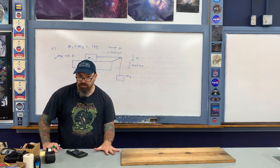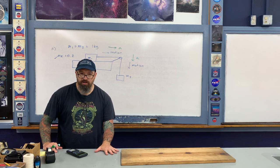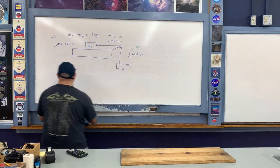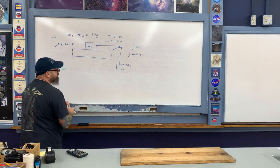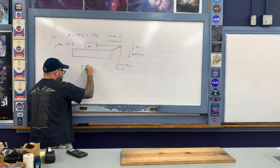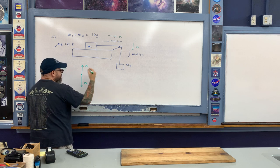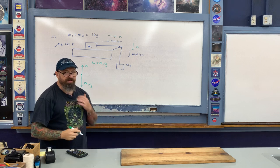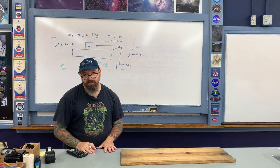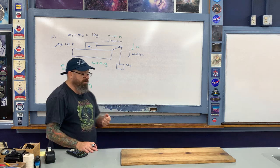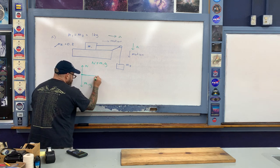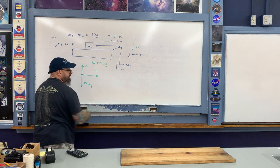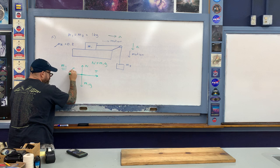Let's examine the force diagrams exerted upon each object and ultimately calculate the acceleration. For M1, there are four forces acting on it. First, the normal force upward N, and the weight M1G downward. There's no vertical acceleration, so these forces cancel out. As the object is pulled to the right, we have the tension vector from the string. Since it's initially moving to the right, opposing the motion is the force of kinetic friction.